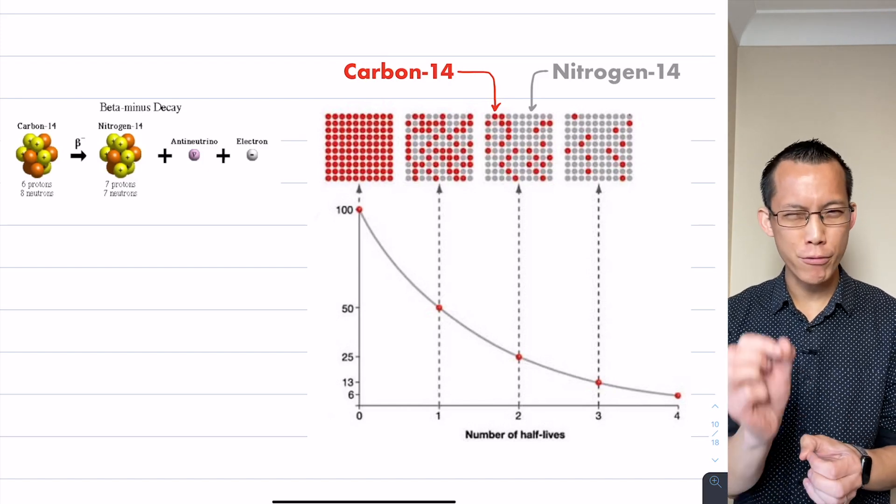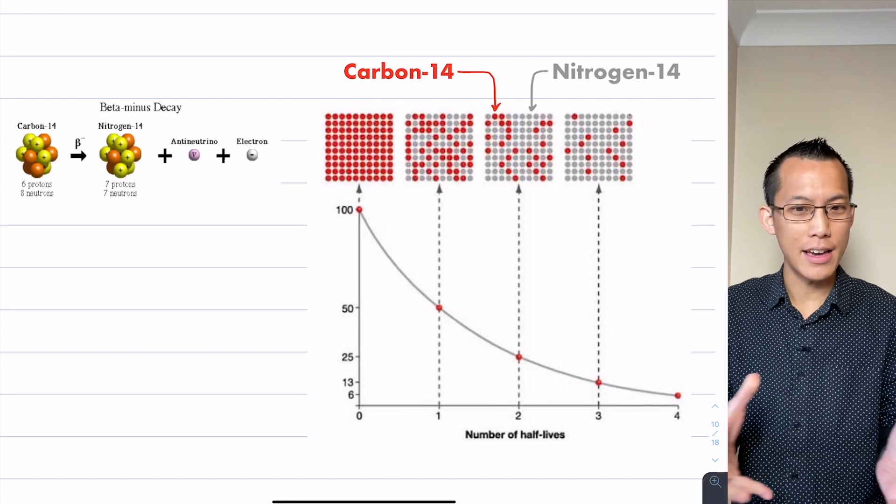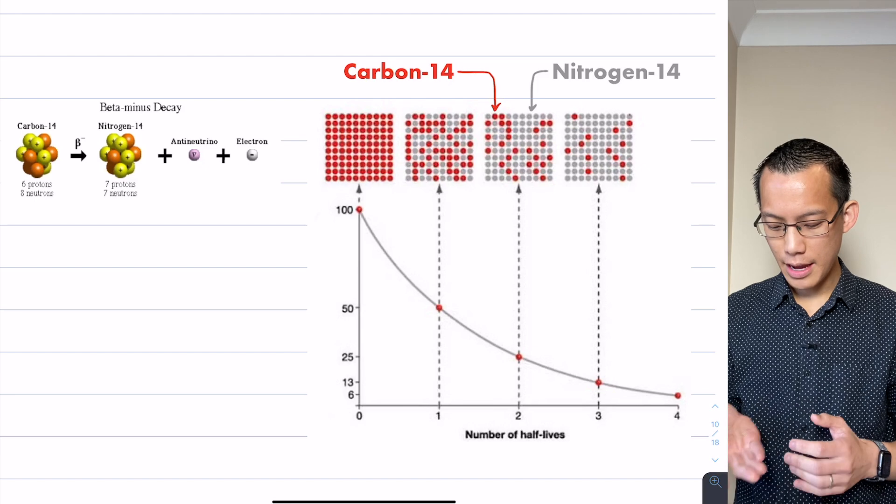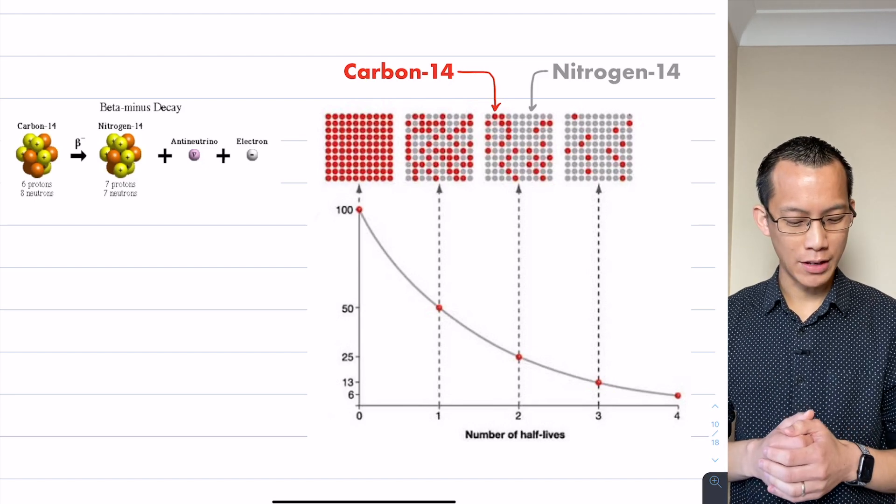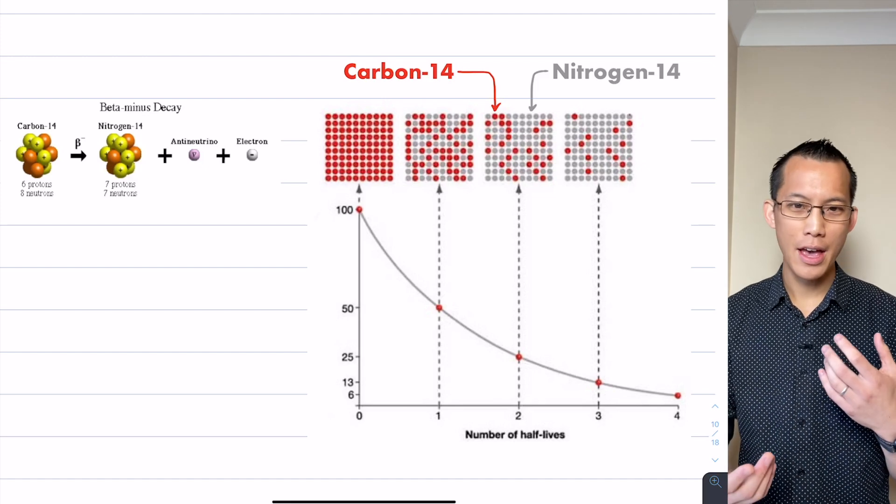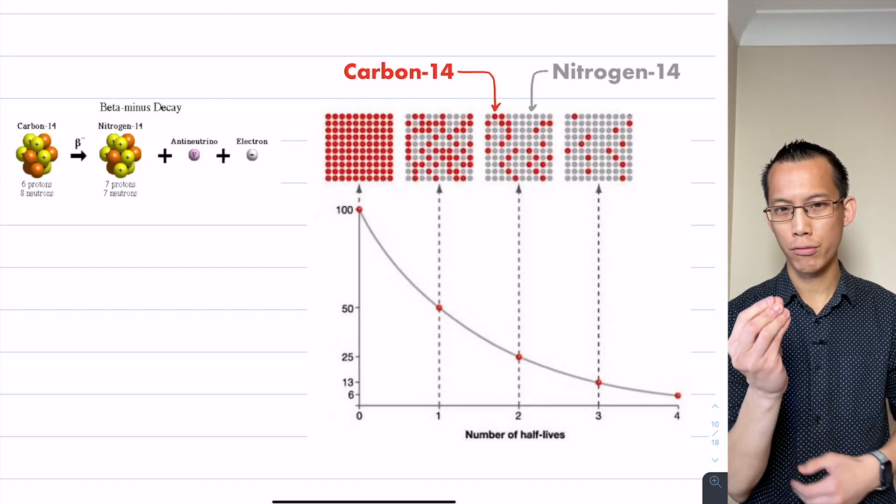So the rate of change is again proportional to the size of whatever you're dealing with. Instead of population size, in this case it's a number of atoms that are giving off radiation. We see exponentials and logarithmics all around us - they are a crucial piece of knowledge and skill to master.